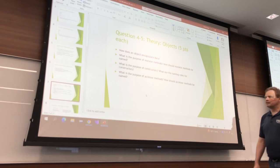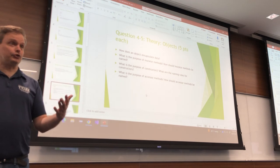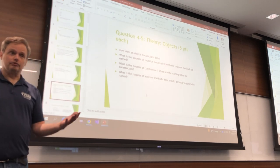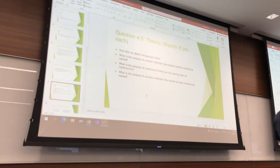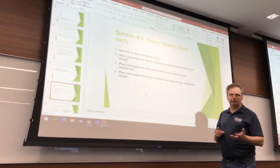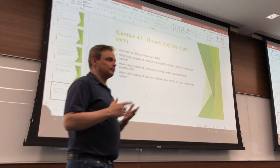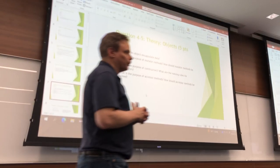By restricting who has access to the information. You make your data members private so nobody else can access them, and then you provide public methods to provide access to that data. You make your fields private and your methods that want to touch those fields public — that's how it encapsulates it. That's one of the big three advantages of object-oriented programming.